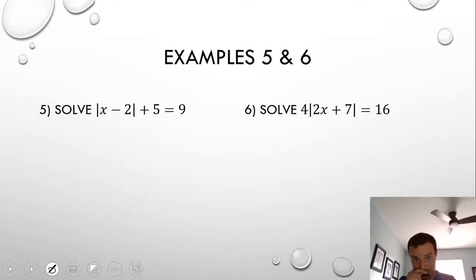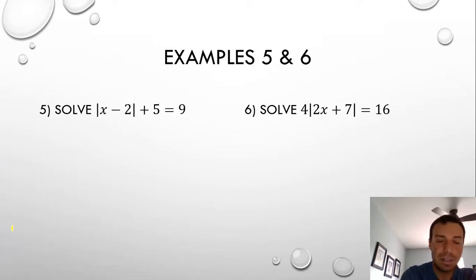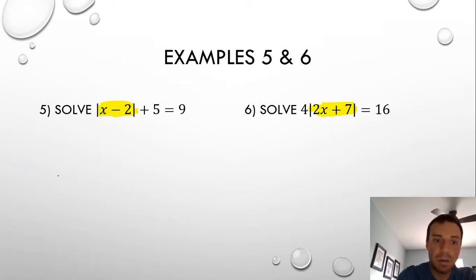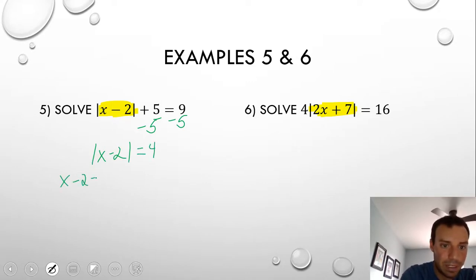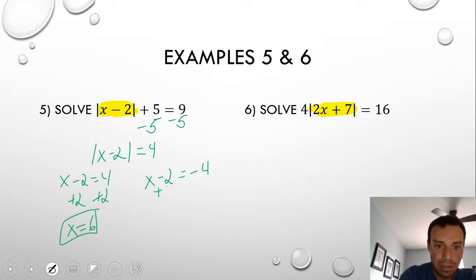Let's look at a couple more examples where we have to isolate absolute value. In example 5, subtract 5 first to get the absolute value of x minus 2 equals 4. Then write two cases: x minus 2 equals 4 gives x equals 6; x minus 2 equals negative 4 gives x equals negative 2. Those are the solutions.